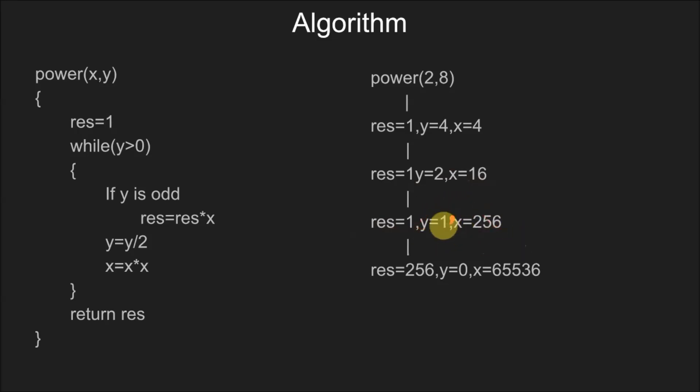This time y is odd, so result equals result times x, that is result equals 256, y equals 0, and x equals 65536.